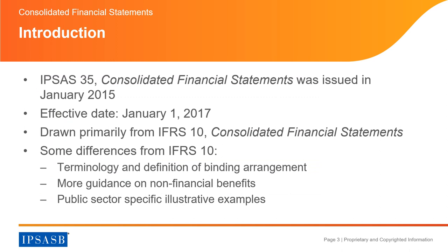IPSAS 35 Consolidated Financial Statements was issued in January 2015. Together with IPSAS 34 Separate Financial Statements, IPSAS 36 Investment in Associates and Joint Ventures, IPSAS 37 Joint Arrangements, and IPSAS 38 Disclosures of Interests in Other Entities. These IPSAS are very much related and it is important to know how they interact and their main concepts. The effective date of IPSAS 35 is January 1, 2017.